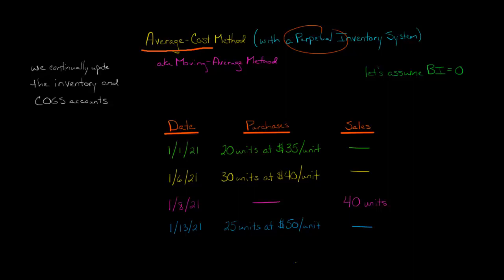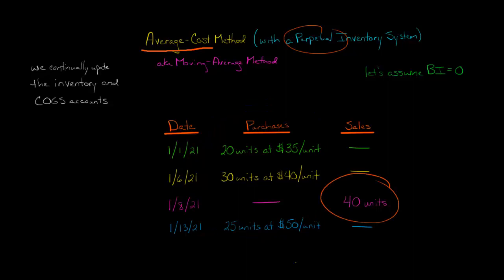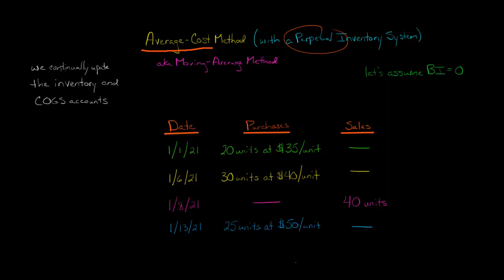Let's start with an example. We'll assume that beginning inventory for a retail company is zero, and then we've got a series of purchases throughout the period, and then we have a sale. They start out by buying 20 units at $35 a unit, then they purchase 30 units for $40 a unit, and then on January 8th they end up selling 40 units.